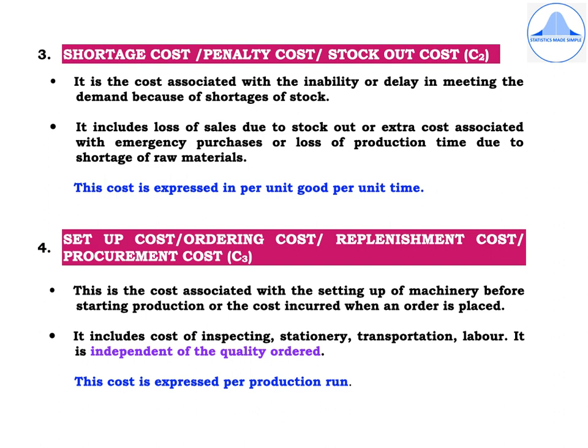Fourth, we have the setup cost or ordering cost, also called the replenishment cost or procurement cost, denoted by C3. This is the cost associated with setting up machinery before starting production, or the cost incurred when an order is placed. It includes cost of inspecting, stationery, transportation, and labour. It is independent of the quantity ordered, and this cost is expressed per production run.